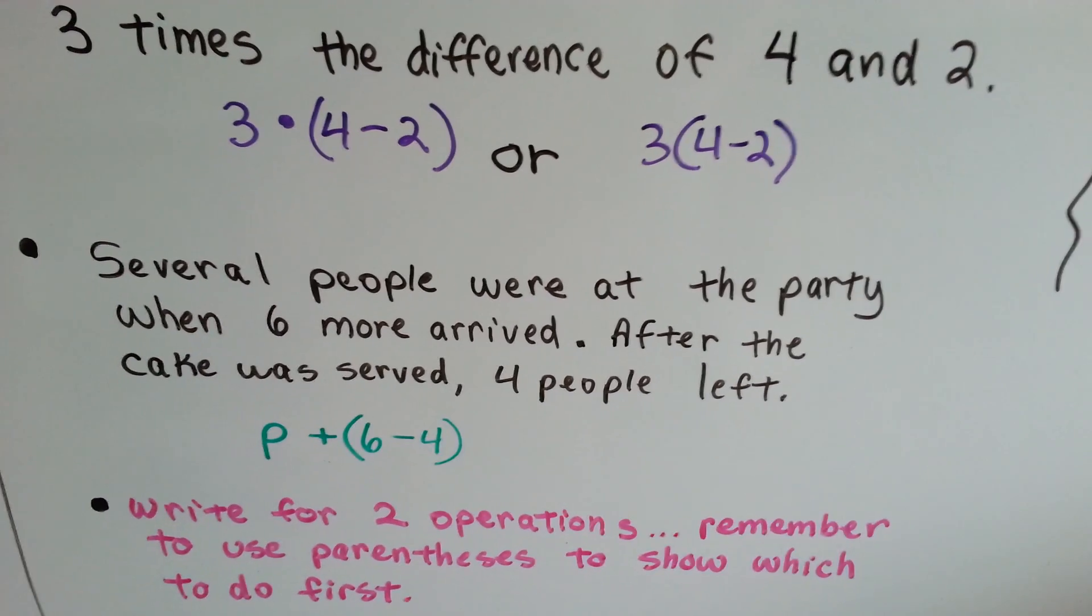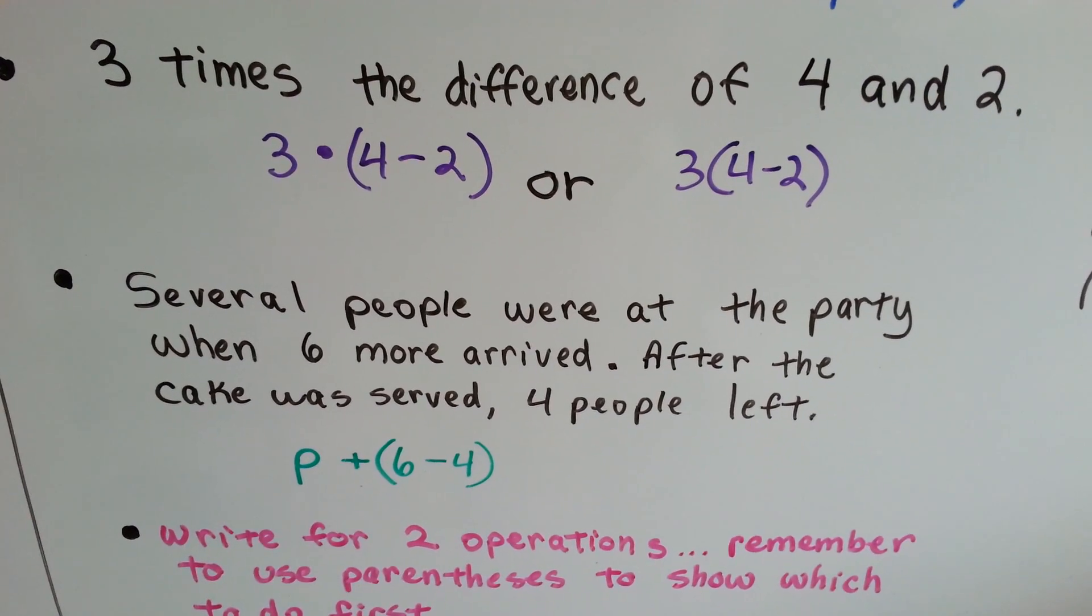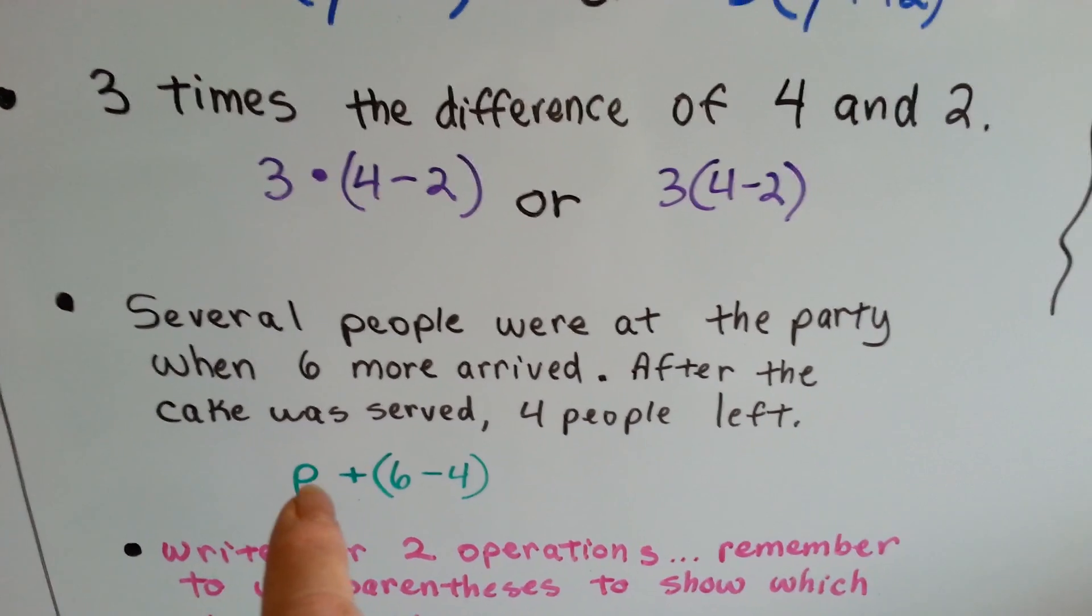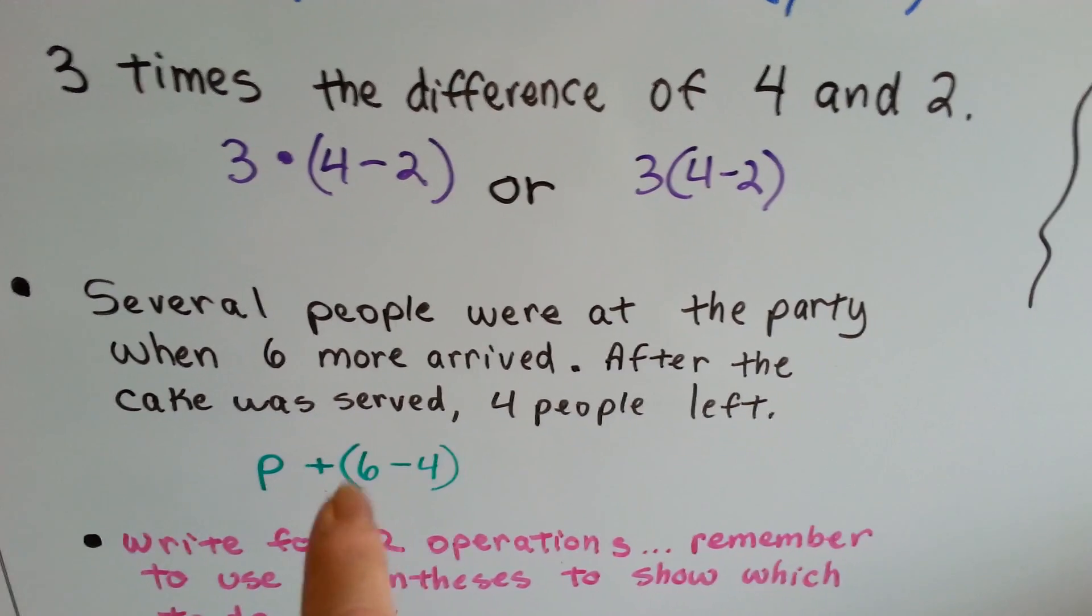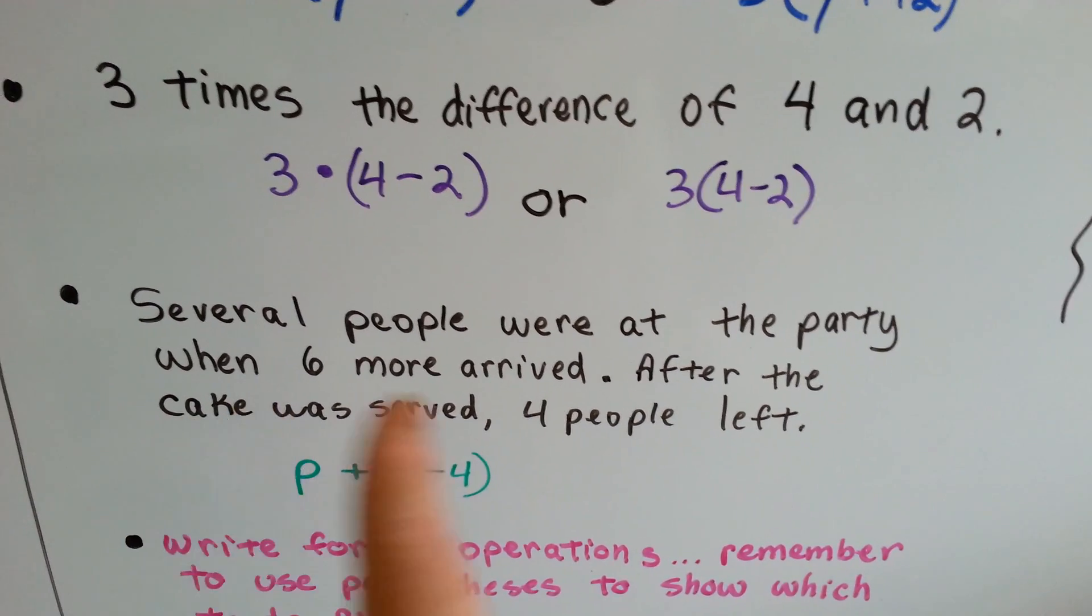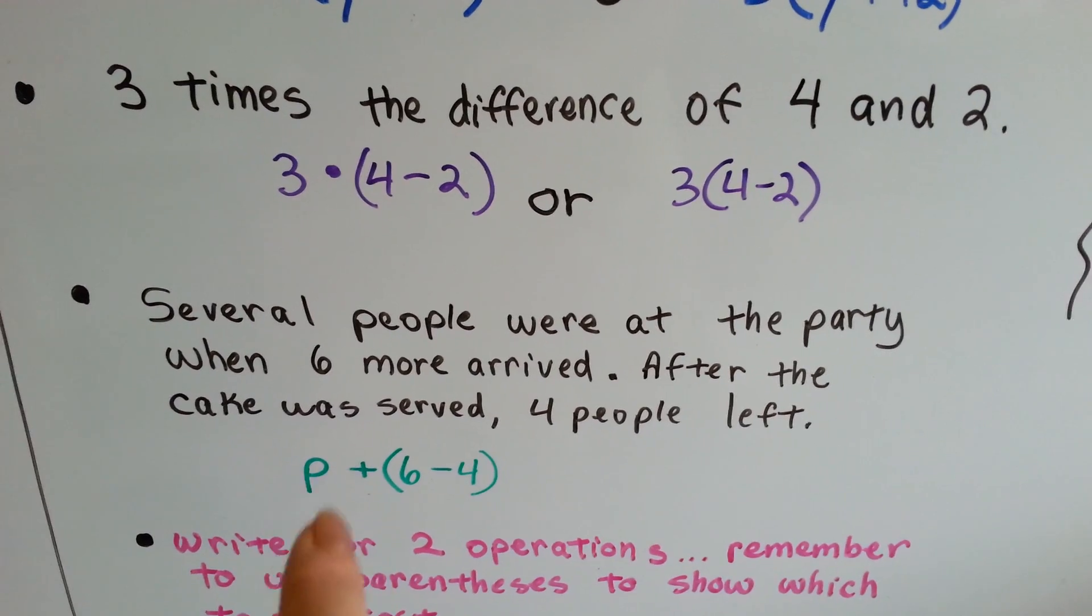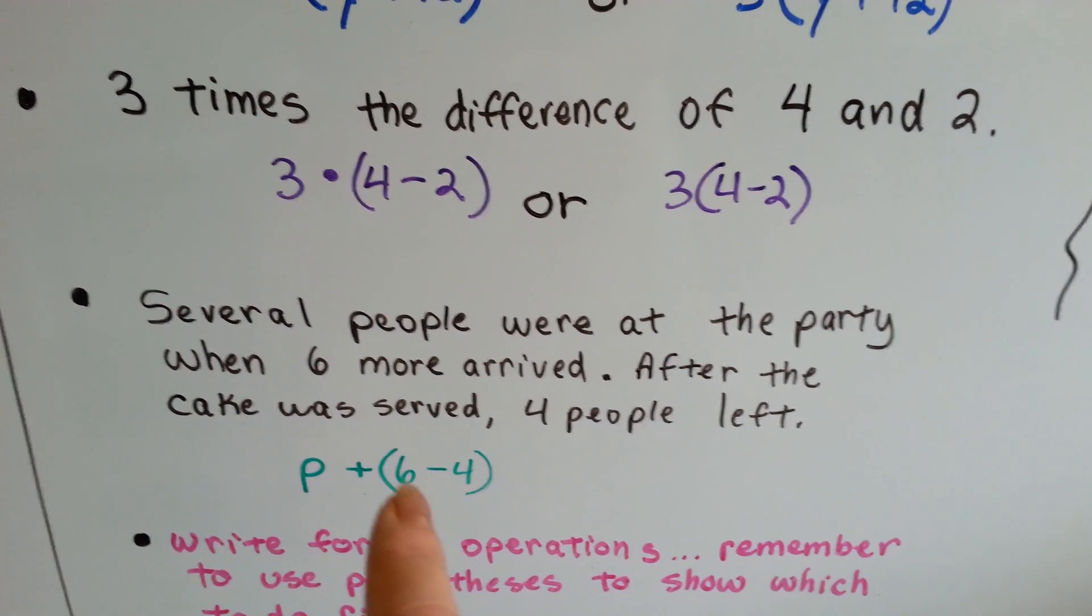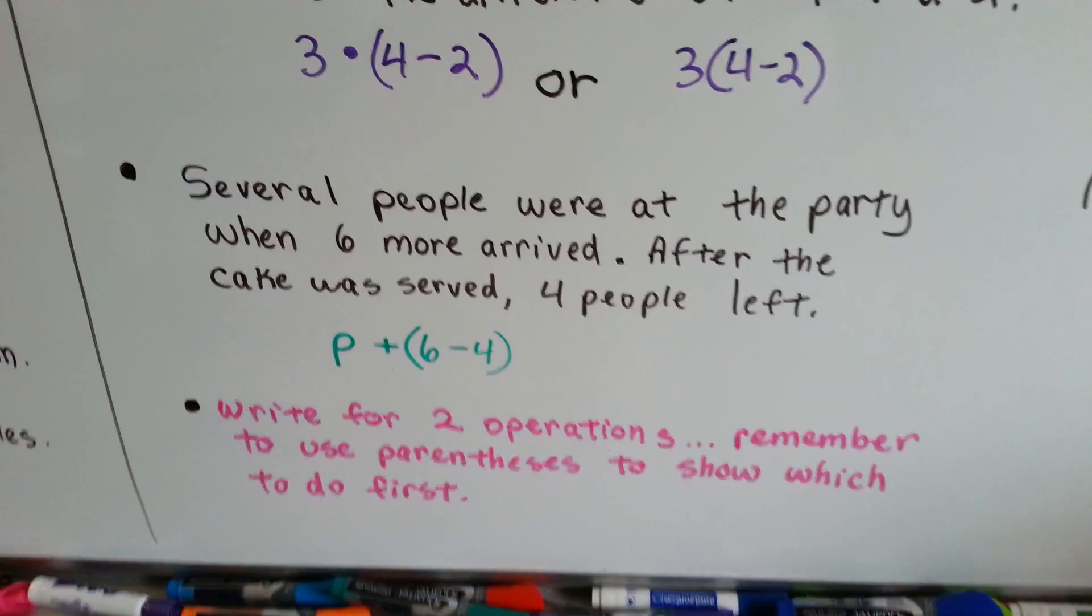Several people were at the party when 6 more arrived. After the cake was served, 4 people left. So we use p for people, and we can say p plus 6 minus 4. And then you would know how many people were at the party. 6 arrived, 4 left. So it's people plus the 6 minus the 4. And then that would be an expression, an algebraic expression.